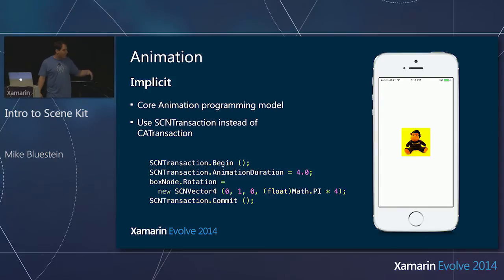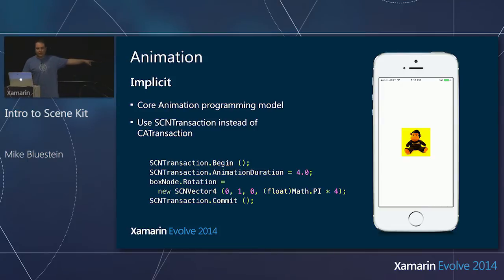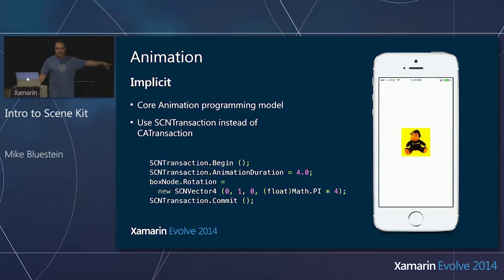You can set a variety of properties that control the animation created implicitly. In this case, I'm creating a rotation to rotate the thing by four pi and apply it to the node — an SCNBox node, the instance of the primitive I've used. Then I commit the animation.